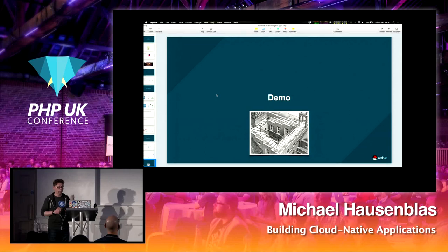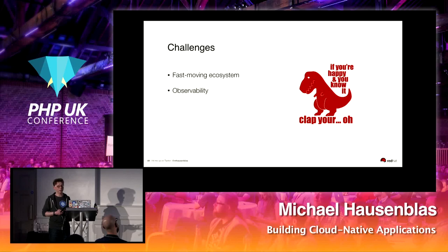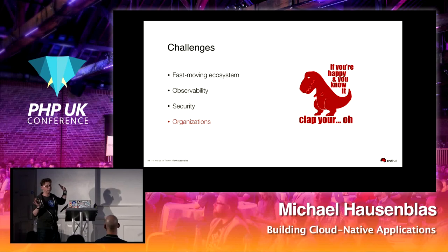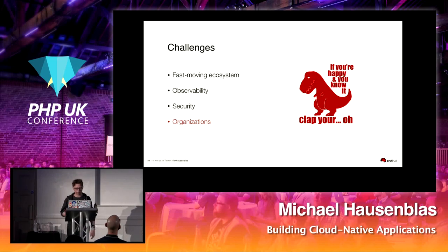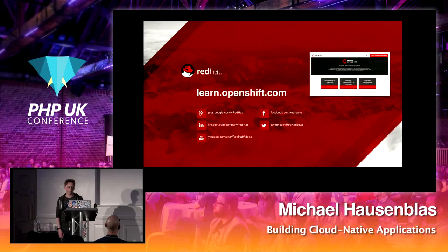Challenges: this space is really fast-moving, so seek guidance from advocates and colleagues. Observability is key. Security — in OpenShift it's built in, but sometimes you need to handle that yourself. Most importantly, and this is where I can't directly help — it's about your organizations. Tooling is the easy part; you can grab it and use it. The hard part is really about organizational change. If you want to try out OpenShift, go to learn.openshift.com for a free environment. Thank you.